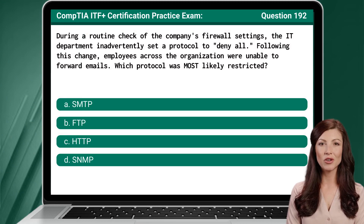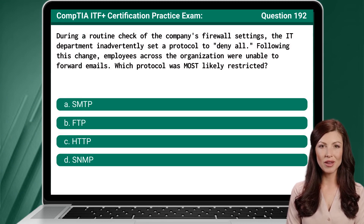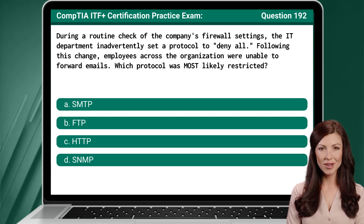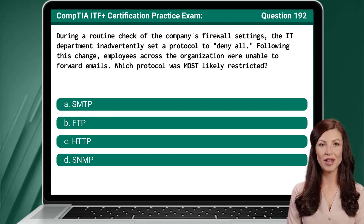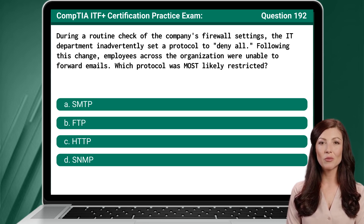Question 192. During a routine check of the company's firewall settings, the IT department inadvertently set a protocol to deny all. Following this change, employees across the organization were unable to forward emails. Which protocol was most likely restricted?